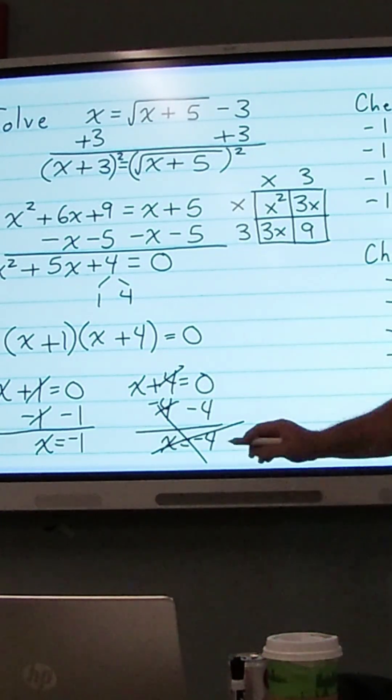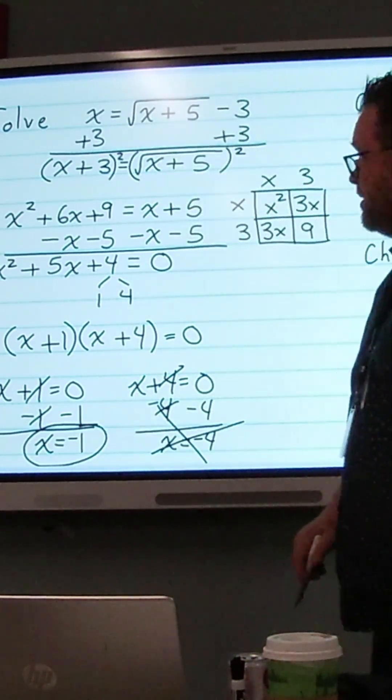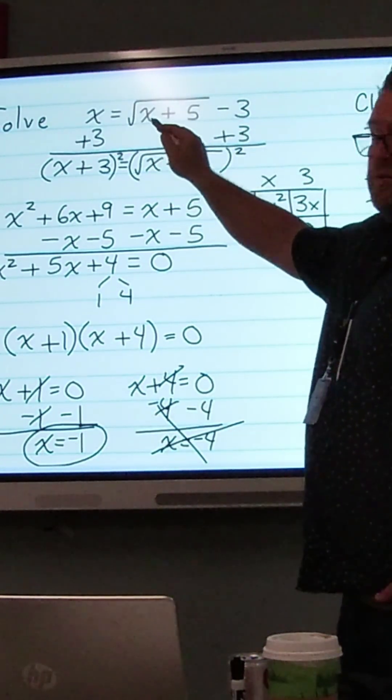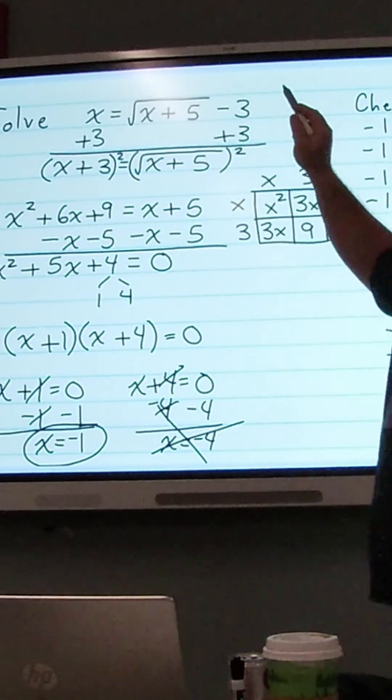X equals negative 1 is the one solution to this equation, x equals the square root of x plus 5 minus 3.